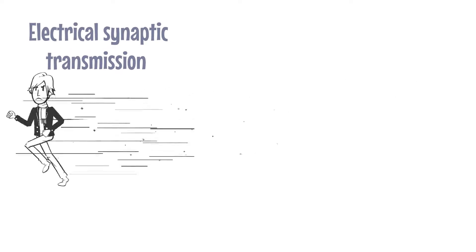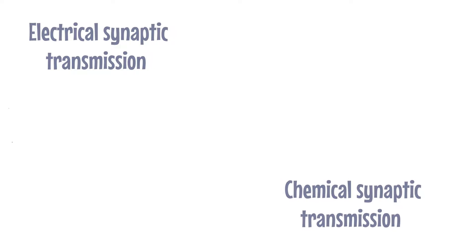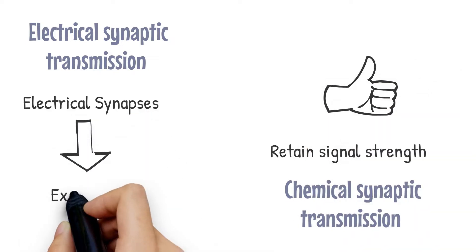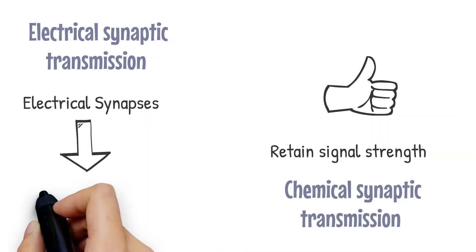Electrical synaptic transmission is faster than chemical ones and happens almost instantaneously. However, the signal strength of electrical synapses diminishes over time, as opposed to chemical synapses that retain signal strength. Electrical synapses can only be excitatory and not inhibitory.